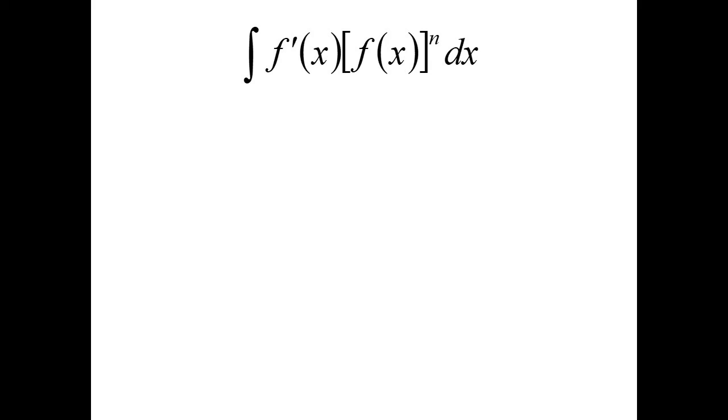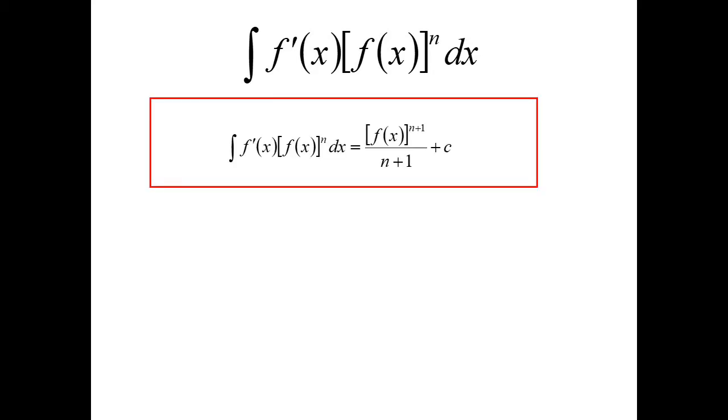I'm going to look at the specific case where we have in our integration the derivative times some function to the power of n. Basically you could call it the reverse chain rule, because normally with the chain rule we'd have some function to the power and we'd bring down the power, lower the power, dip the inside. So if we see we've got the dip the inside times some function to the power of n, we can integrate it straight away.